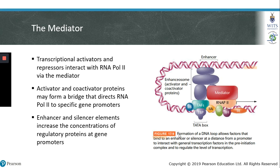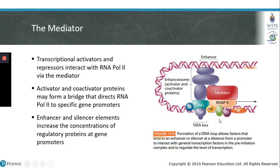This brings us to the concept of the mediator. Enhancers can recruit transcriptional activators or co-activator proteins that interact with a protein called the mediator. The mediator is a protein that can bind to RNA polymerase 2, or the RNA polymerase 2 holoenzyme. Enhancers in complex with activator or co-activator proteins can form the enhancer zone, which recruits the mediator and RNA Pol 2, and this acts as a bridge that can direct RNA polymerase 2 to a specific gene promoter.